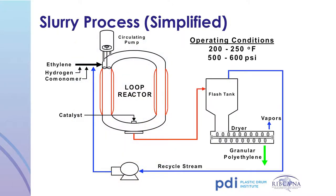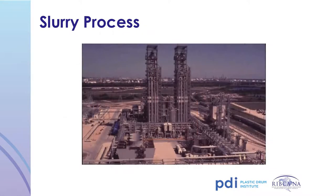The slurry loop process used to manufacture polyethylene can be vertical or horizontal. Similar to gas phase, ethylene, catalyst, and other components are used to form polyethylene powder. During the process, solids form in the suspension and are pulled off the loop; the carrier fluid is flashed off and polyethylene powder remains. The polyethylene powder is finished similarly to the gas phase process by forming into pellets.